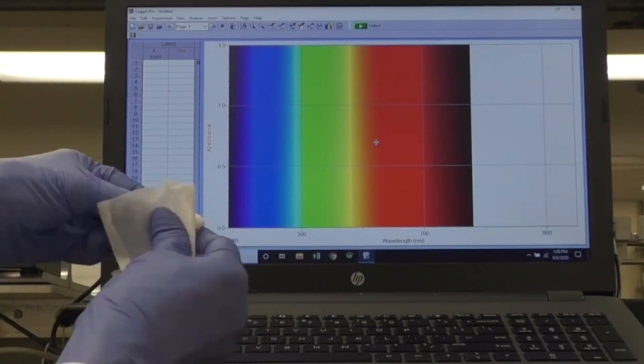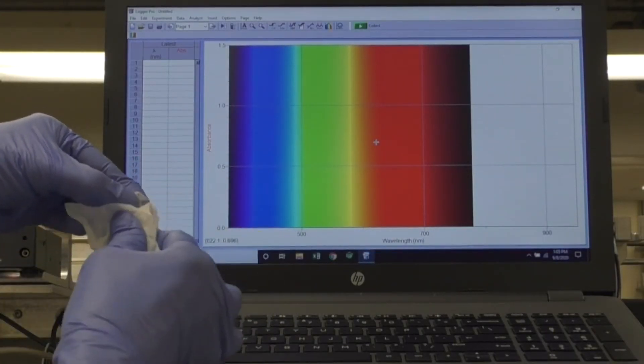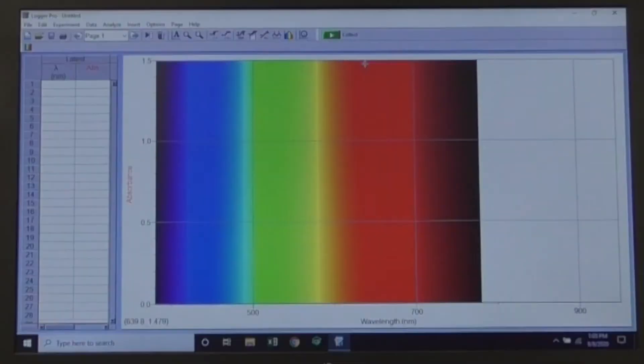When the standard has warmed for 5 minutes, remove it from the dry bath, wipe it well, place it in the spectrometer, and click Collect. Wait a few seconds and click Stop.